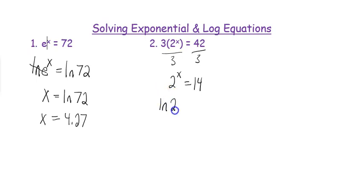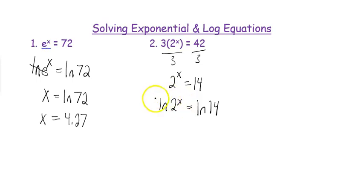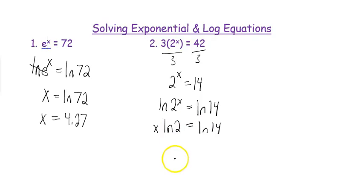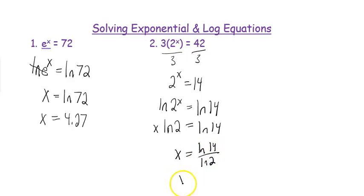So I'm going to natural log of 2 to the x equals natural log of 14. Then you want to think of that power rule — moving the x to the front gives you x times natural log of 2 equals natural log of 14, and then you divide by the natural log of 2. Natural log 14 divided by natural log of 2 gives 3.8.